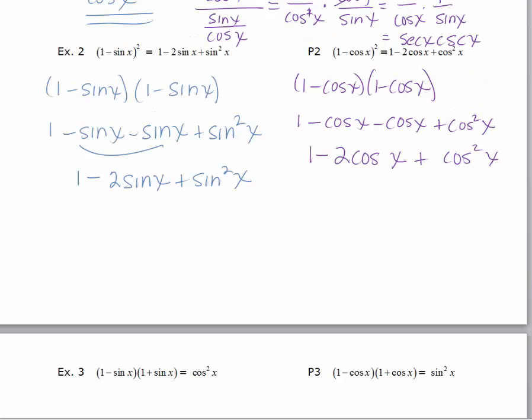That should be two cosine x plus cosine squared x. And so we got the same expression when we multiplied this out that is on the right hand side of the equation or the identity.